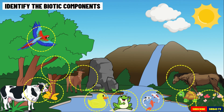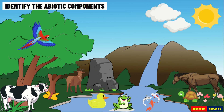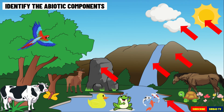How about the abiotic components? You are right. The abiotic components are the following: sunlight, clouds, water, mountains, rocks, soil, air, and temperature.